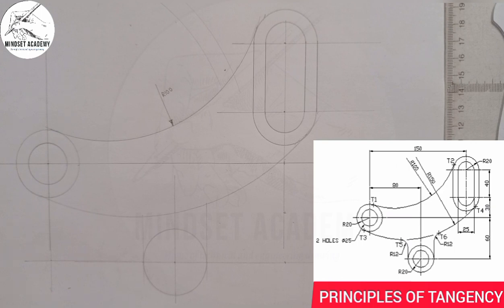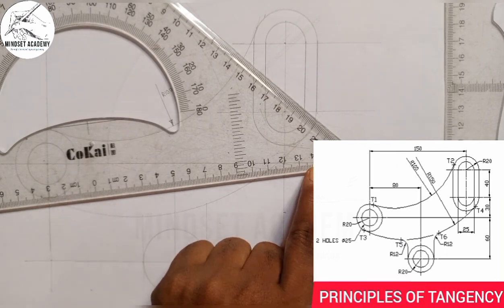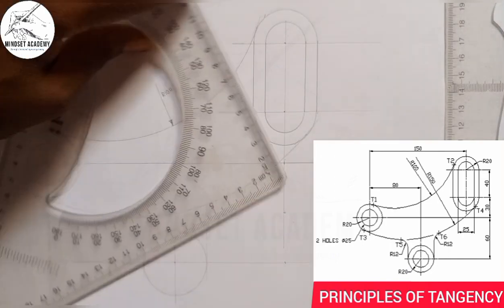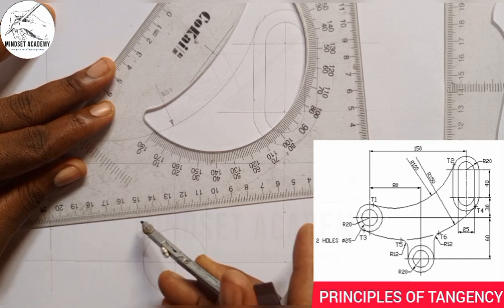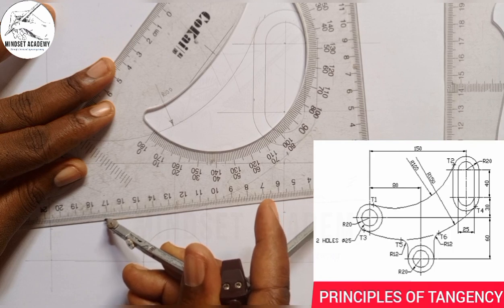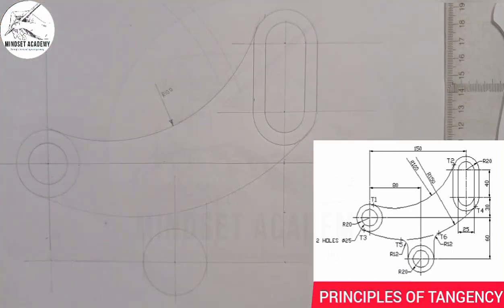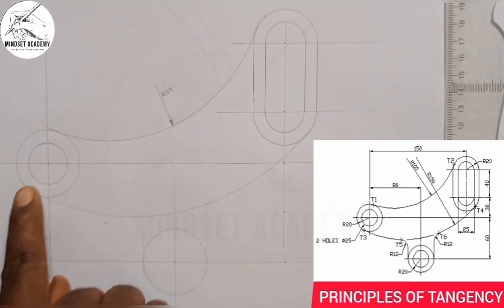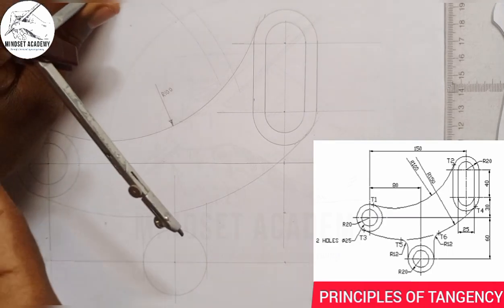Starting from 0 to 162 on my ruler, I'll place the compass at the point where the arcs intersect and draw an arc from that point, making sure the arc touches the required circles.